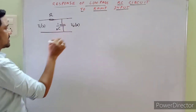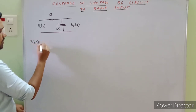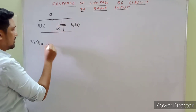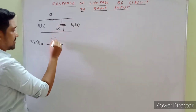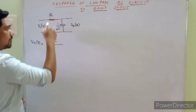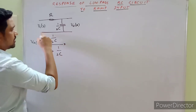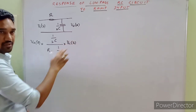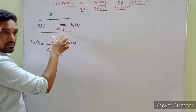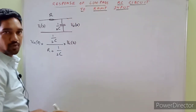According to the potential divider rule, V₀(s) is written as the impedance across which the output is collected — that is, 1/(sC) — divided by the total impedance R + 1/(sC), multiplied by the input voltage VI(s). This equation helps us derive the final response expression.